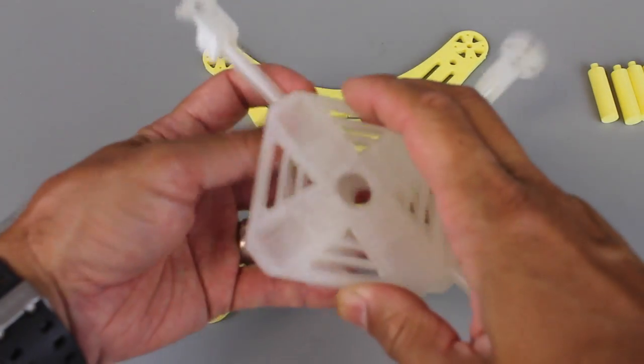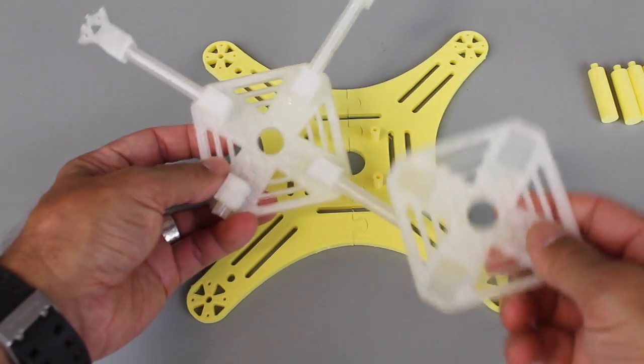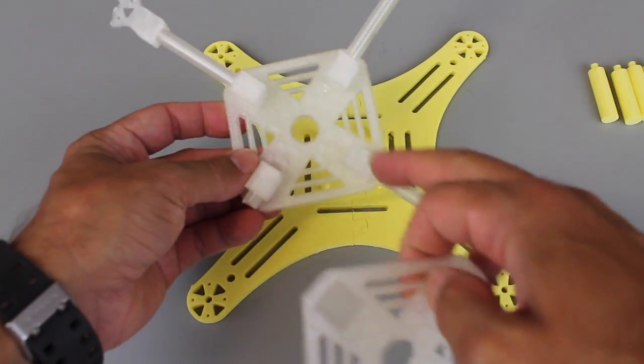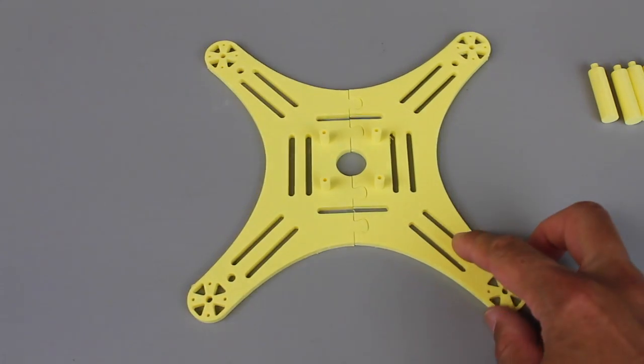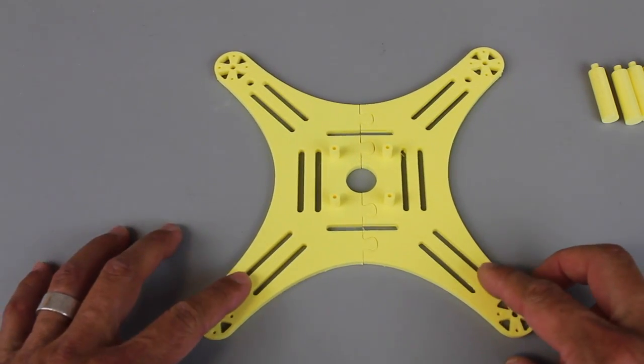One goal I had in mind - this thing has basically ten pieces: your two plates, your four arms, and then your four motor mounts. I wanted to minimize the number of parts, and in this case we have six.